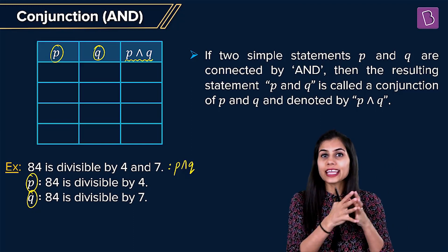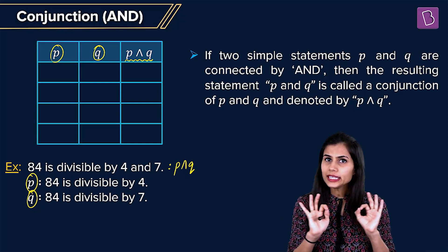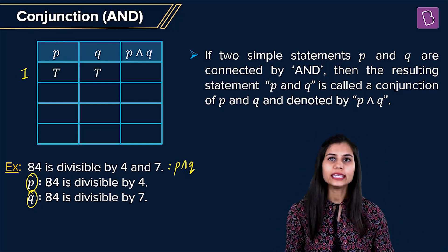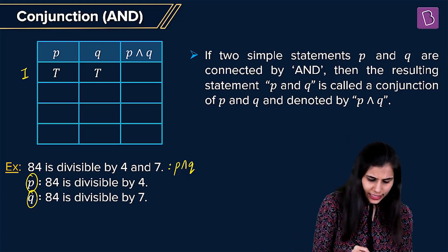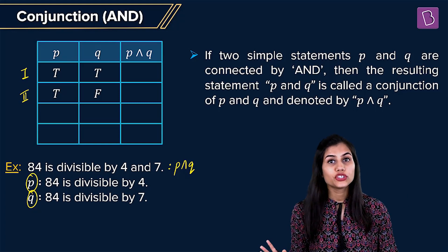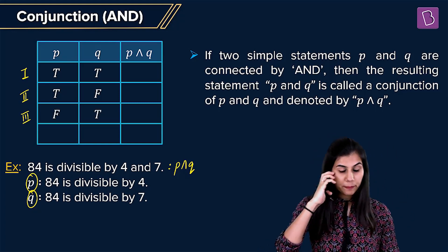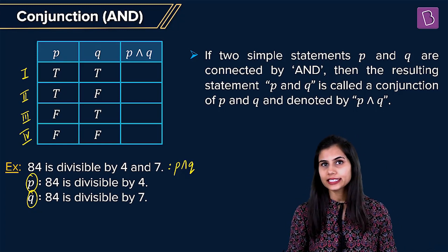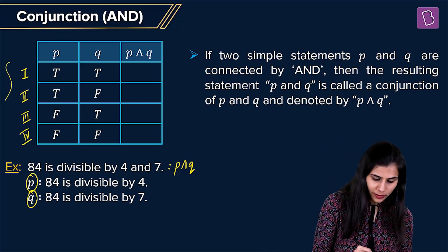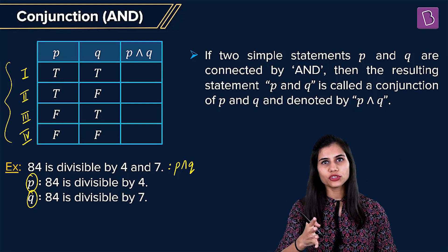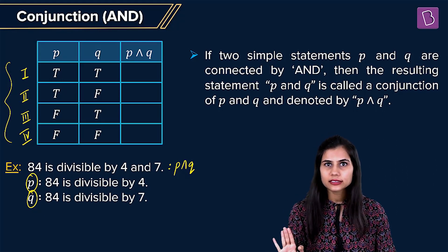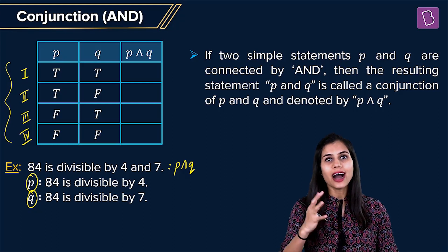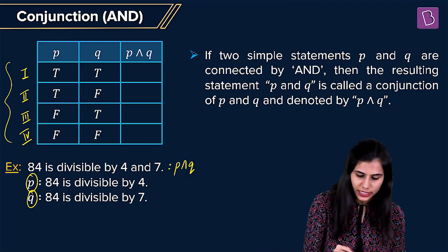In what combinations can P and Q be true and false? The first case: both P and Q are individually true. The second case: P is true and Q is false. The third case: P is false and Q is true. And the fourth case — both P and Q are false. These are the only four scenarios in which P and Q can be true and false. Our agenda is to understand how, in each of these four scenarios, we get the truth and falsity of the conjunction statement P ∧ Q.